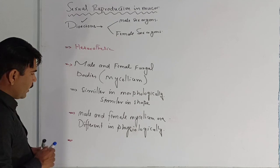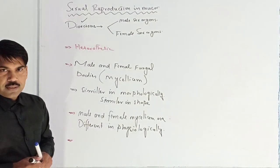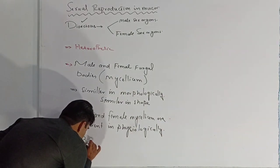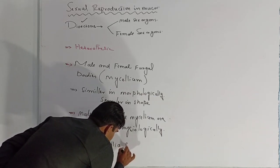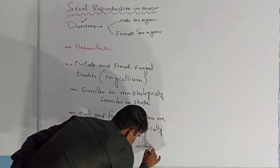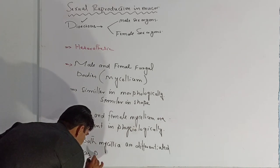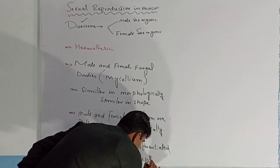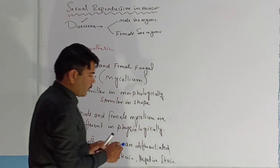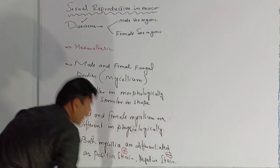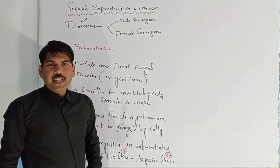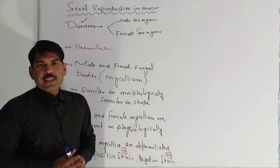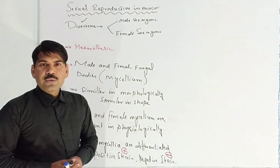The next point is that the mycelium which produces the sex organs is differentiated as positive and negative strains. Both mycelia are differentiated as positive strain and negative strain. One of these acts as male, and the other acts as female sex structures. Now we will discuss how fusion and fertilization take place to produce a new fungal body of Mucor.